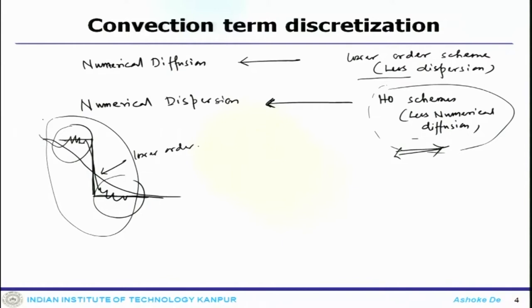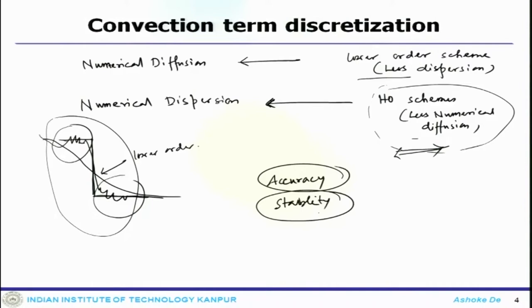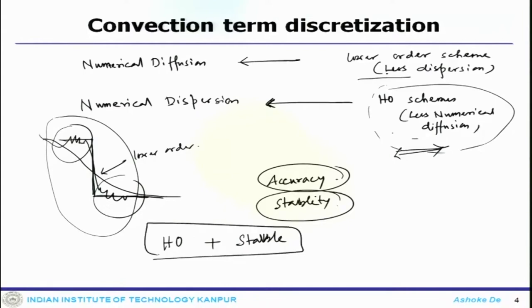This will happen with the lower order scheme: because of diffusion things become much smoother, and then it goes away from capturing that particular gradient. So these are the problems — on one hand you want higher accuracy, but at the same time you want stability. Higher order schemes are accurate but not very stable; lower order schemes are not accurate but more stable. We need to devise a different kind of scheme or class of scheme which will be of higher order plus stable.